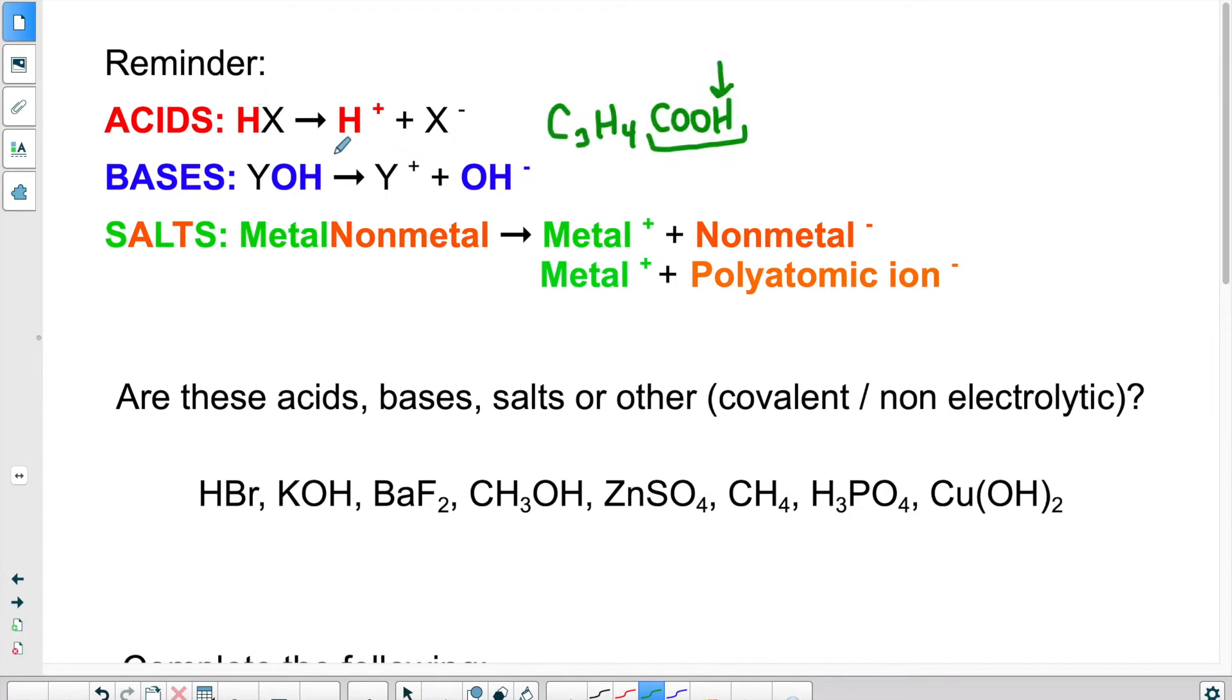Now for the bases, we have the end of the formula, it ends with OH. It's important that the beginning of it be basically a cation, so normally it's going to be a metal. So that's going to split into your metal here, which is going to form your cation, and your hydroxide ion.